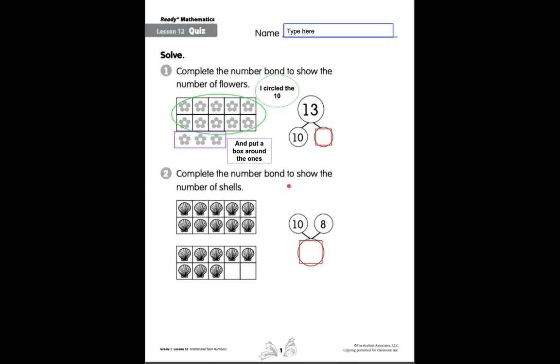For number two it says complete the number bond to show the number of shells. Now you can follow the same pattern I did with your mind and you can circle the ten in the shells and then think, here's my extra ones.